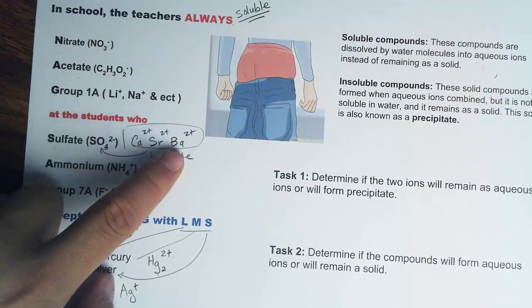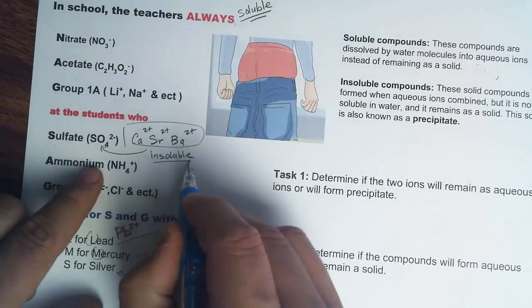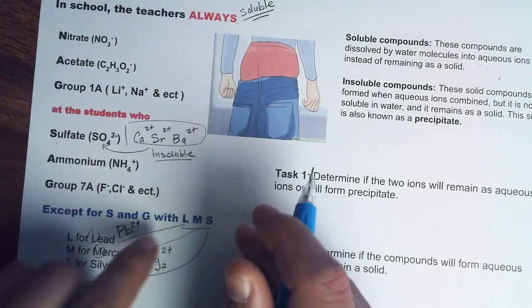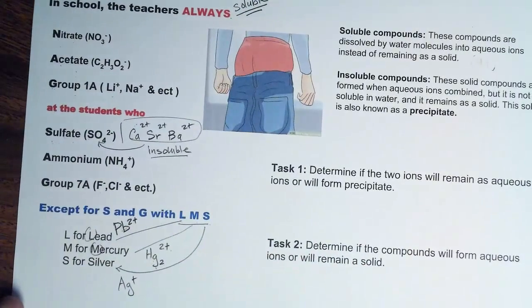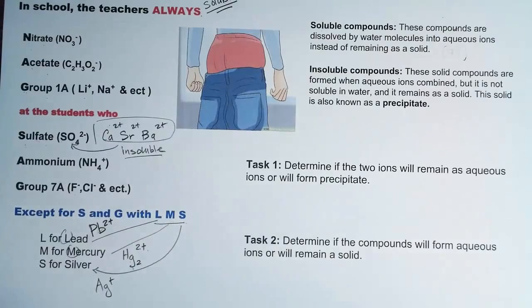When sulfate bonds with calcium, strontium, or barium, it will be insoluble — the same as with LMS. Keep that in mind. Now let's look at specific compounds.